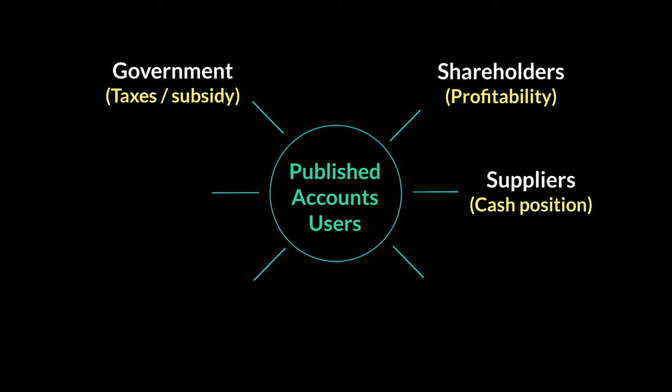Then you have your suppliers. Suppliers provide you raw materials of all sorts and they want to be paid in cash. They want to find out if your cash position is good enough for them to be paid immediately. If they look at your SOFP and find that your cash position is not so good, then it will discourage them from sending you more supplies because they wouldn't be guaranteed their payment immediately.